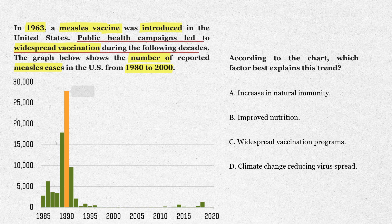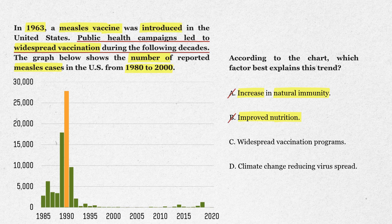Now let's test the answer choices. Option A: increase in natural immunity. That would take many decades and wouldn't explain such a rapid drop. Cross that one out. Option B: improved nutrition. Better nutrition helps general health, but it doesn't nearly eliminate one specific disease. Cross that one out too.